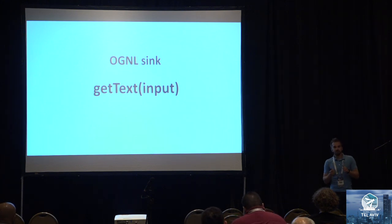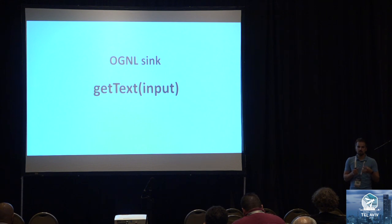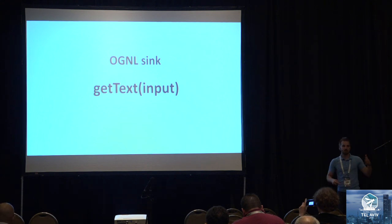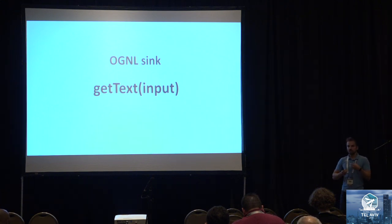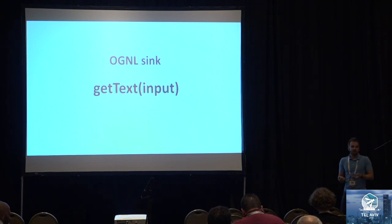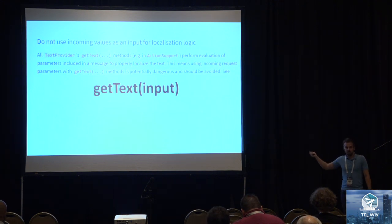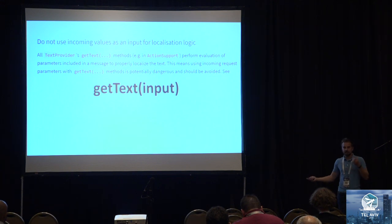In further examples I use the method getText as the OGNL injection point. Originally it's a method that allows you to get messages for localization — if you have several languages in your application, you put a message and the application knows which language to use. But it has an interesting feature: if it doesn't find the message, it evaluates the input as an OGNL expression. Even in the security documentation of Struts, they write that you must not put user input inside getText because it will be evaluated — so that is exactly what I do.